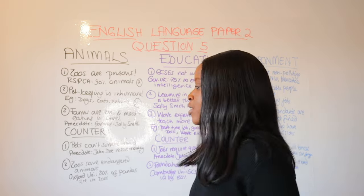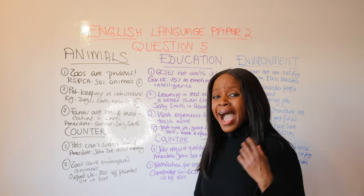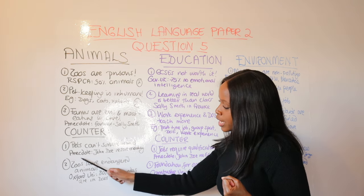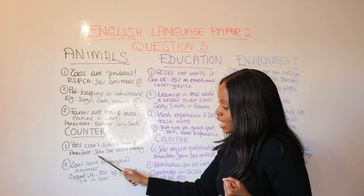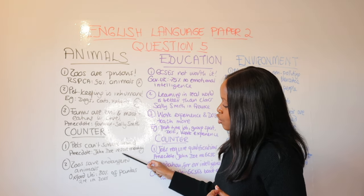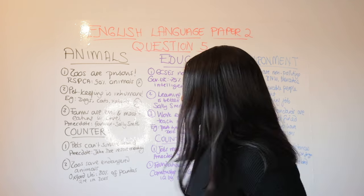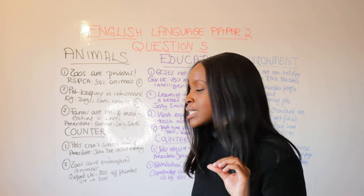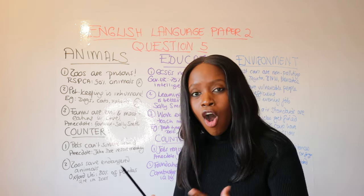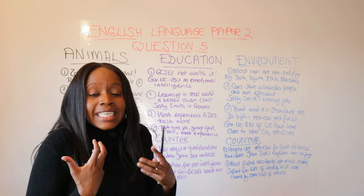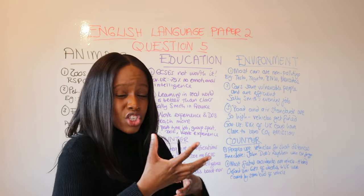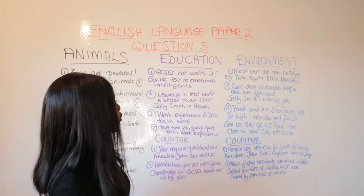Those are the three points for any animal welfare question. For the counterarguments: first, keeping domesticated pets is actually humane because they can't survive in the wild — for example, John Doe rescued a monkey that would have otherwise died. Second, zoos play a significant part in saving endangered animals; a made-up statistic is that Oxford University found 80% of pandas are in zoos and are no longer endangered because of the role zoos play.